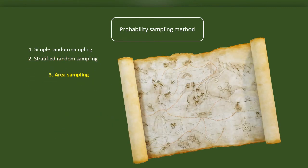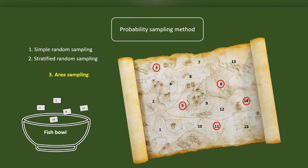In area sampling method, we will choose the areas and all the members in the chosen area will become a part of the sample. For instance, while conducting research on the political socialization among citizens between the age of 45 and 55 in a gram panchayat with 15 wards, we may randomly choose 5 wards. All the citizens aged between 45 and 55 in these wards will be chosen for the sample.